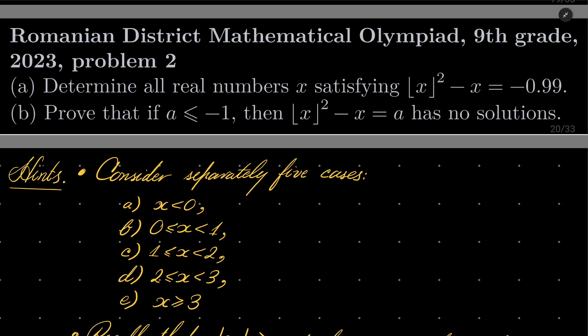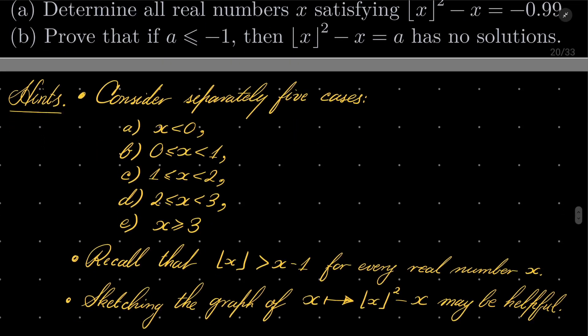Here are my hints for this problem. I suggest that you consider five cases separately: x negative, x between 0 and 1, x between 1 and 2, x between 2 and 3, and finally x greater than or equal to 3. Remember the property that floor of x is always strictly greater than x minus 1 for every real number x. Sketching a good graph of our function on the left-hand side may also be helpful. Give this problem a try and I will see you in just a minute.